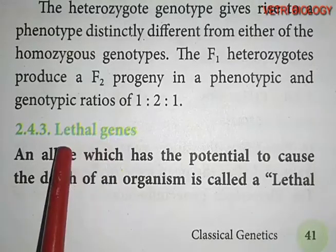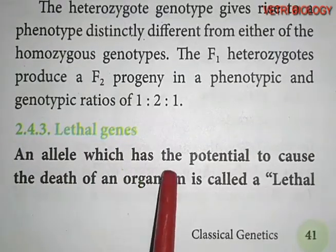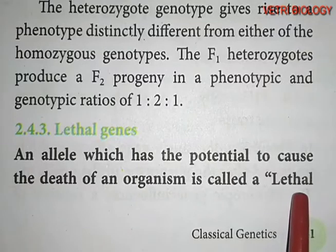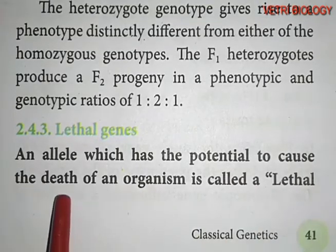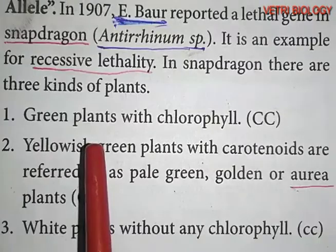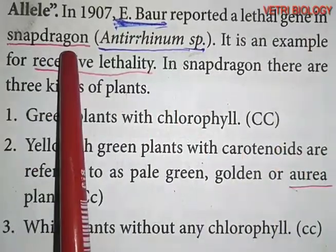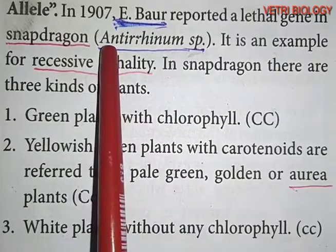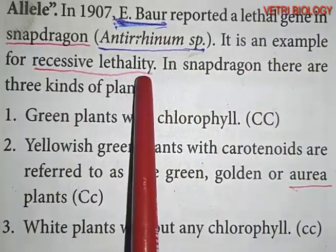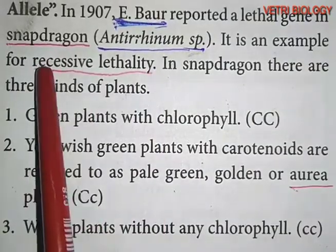The next example of intragenic interaction is lethal genes. An allele which has the potential to cause the death of an organism is called a lethal allele. In 1907, E. Baur reported a lethal gene in snapdragon — a plant belonging to the Antirrhinum species. This is an example of recessive lethality.